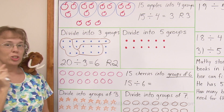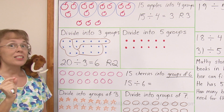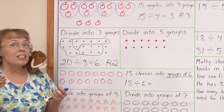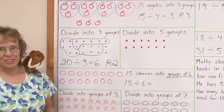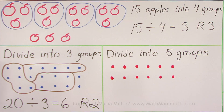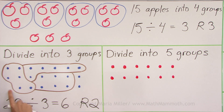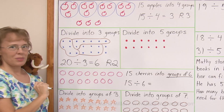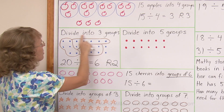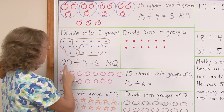You can also check this division, just like you can check any division, by multiplication. You multiply six times three — either way — you get 18. That's all those blueberries in the three groups. Then you add two, and that gives you the total number: 20.